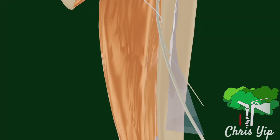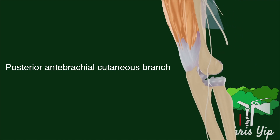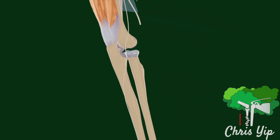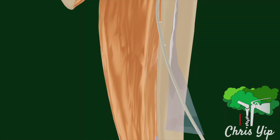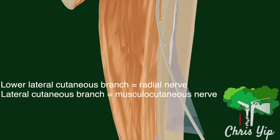The posterior antebrachial cutaneous branch is also given off, which travels in the posterior compartment of the forearm, giving sensory innervation to the dorsum of the forearm and the wrist. Note that the lower lateral cutaneous branch is actually different to the lateral cutaneous branch, which is actually a branch of the musculocutaneous nerve.